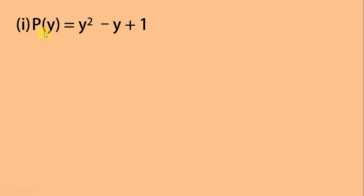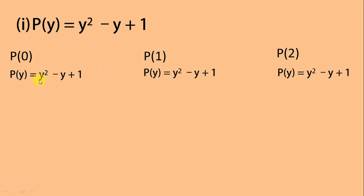Let's move to the first part. Our first polynomial is p(y) = y² - y + 1. In the first step we write what we have to find; in the second step we write the polynomial; in the third step we put the value of y: 0, 1, and 2 respectively.